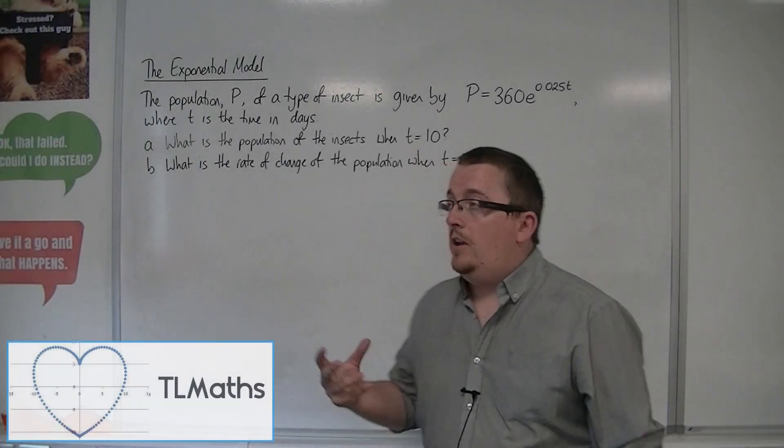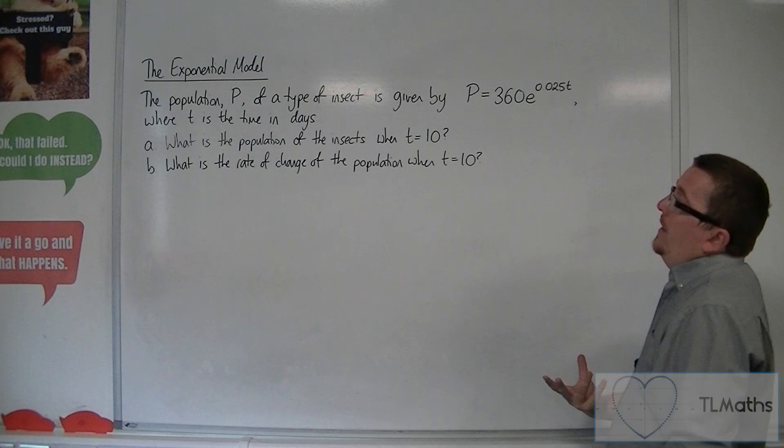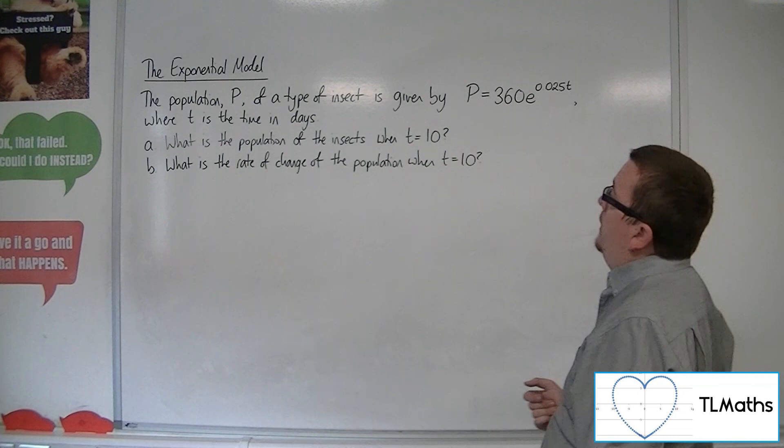So here is a contextual problem. The population P of a type of insect is given by P equals 360e to the 0.025t, where t is the time in days.